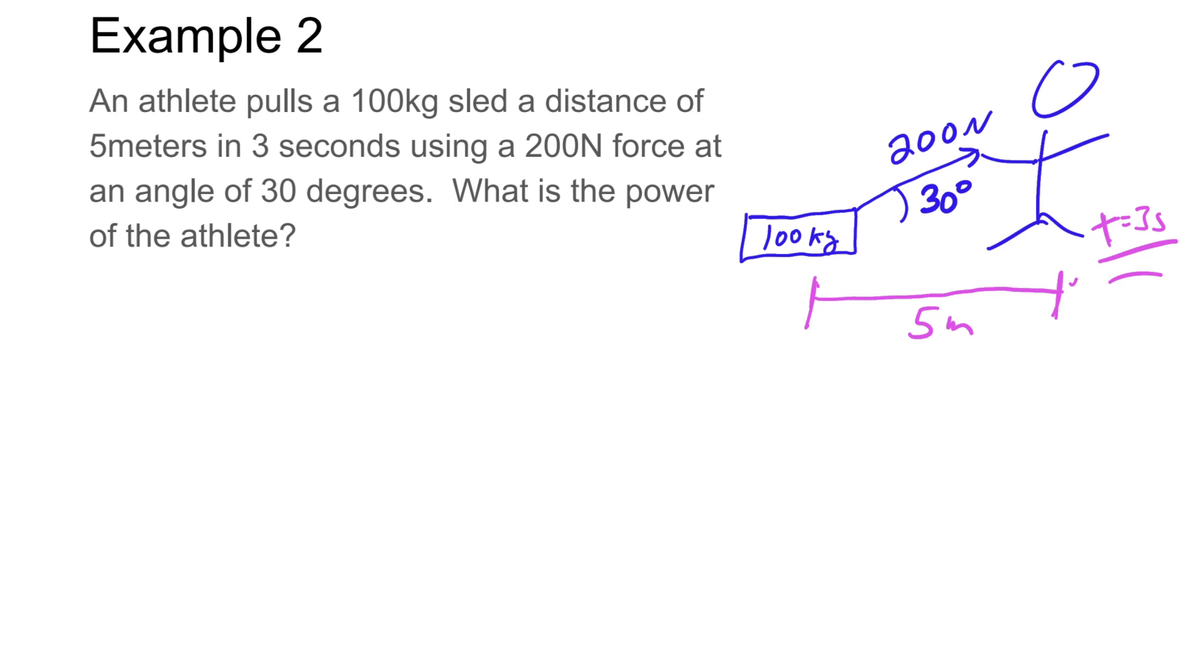We're just going to use power equals work over time. Work is force distance, but it's not just force times distance, it's force parallel to distance. In this case, even though we're pulling with 200 newtons of force, the force that's parallel is going to be this component of force. This would be 200 times the cosine of the angle, which in this case is 30 degrees.